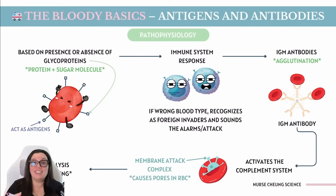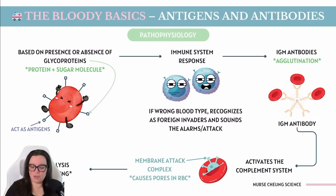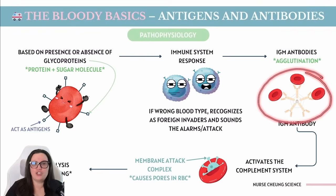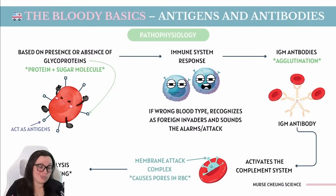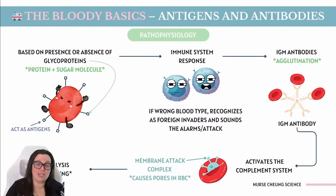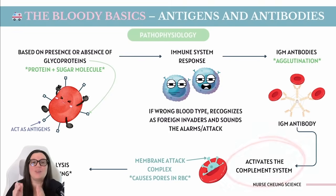If security scans that badge and it does not meet the approved list, the alarms start going off and backup is called in. This is when you enter your IgM antibodies. They don't just grab one enemy cell — they have a full chain reaction, clinging to multiple red blood cells at once. This leads to agglutination, also known as clumping, of those red blood cells, causing major traffic jams inside your blood vessels.